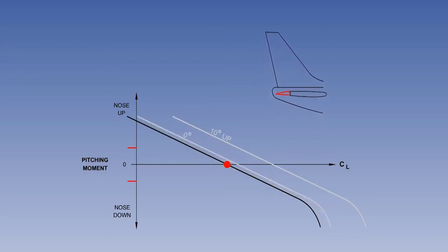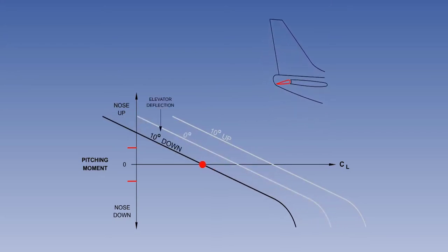The aircraft continues to maintain level flight by decreasing the angle of attack as indicated airspeed increases until it is in equilibrium at a higher airspeed. To hold this angle of attack at the higher airspeed, the elevator must remain displaced at 10 degrees down from neutral. A momentary increase in angle of attack generates the same stabilising nose-down pitching moment.